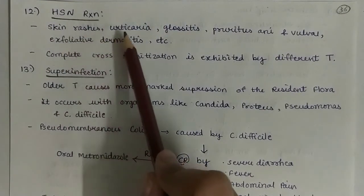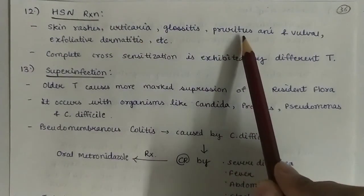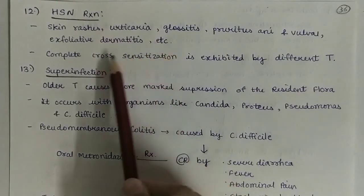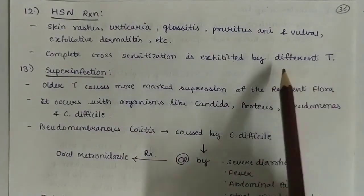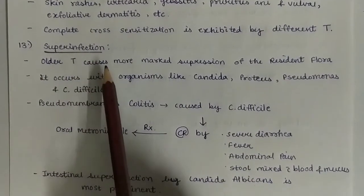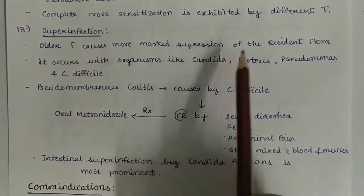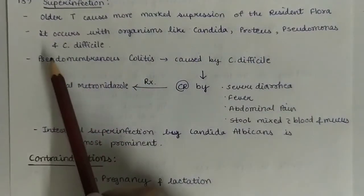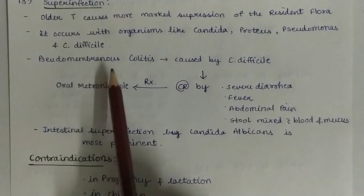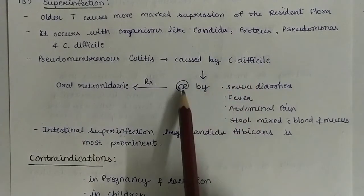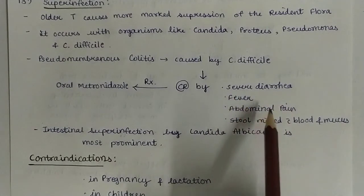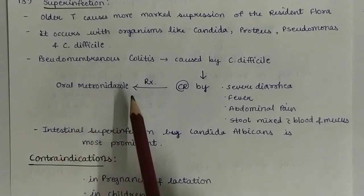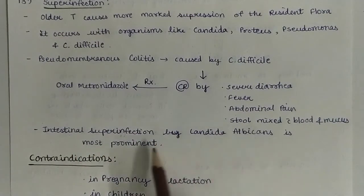Hypersensitivity reactions: skin rashes, urticaria, glossitis, pruritus, anal and vulval pruritus, and exfoliative dermatitis are infrequent with tetracyclines. Complete cross-sensitization is exhibited by different tetracyclines. Next, superinfection: older tetracyclines cause more marked suppression of resident flora. It occurs with organisms like Candida, Proteus, Pseudomonas, and Clostridium difficile. Pseudomembranous colitis caused by C. difficile is characterized by severe diarrhea, fever, abdominal pain, stool mixed with blood and mucus; treatment given is oral metronidazole. Intestinal superinfection by Candida albicans is most prominent.